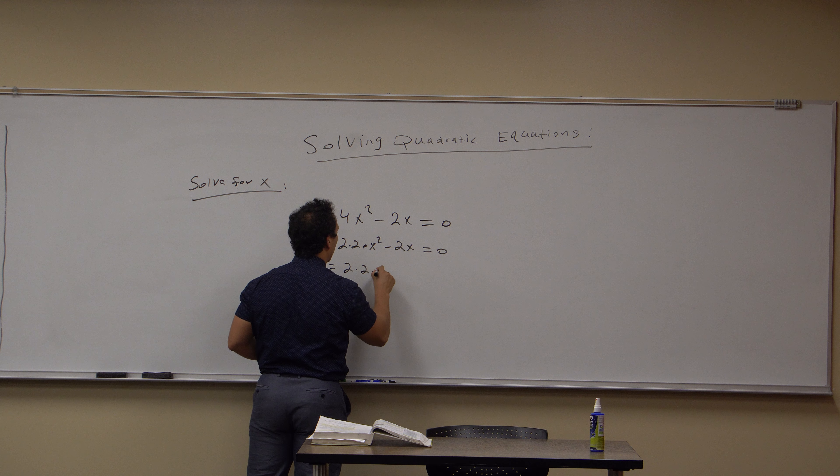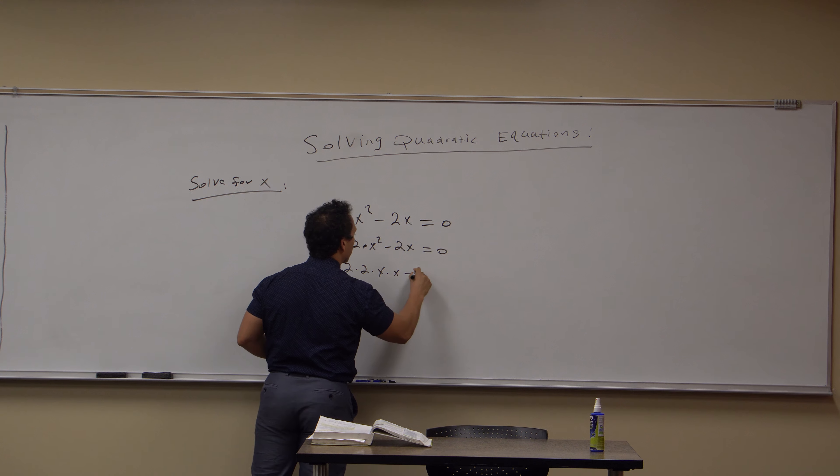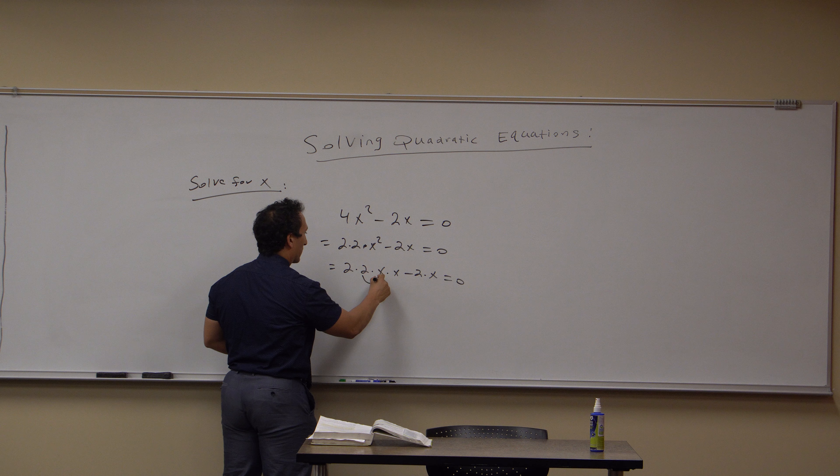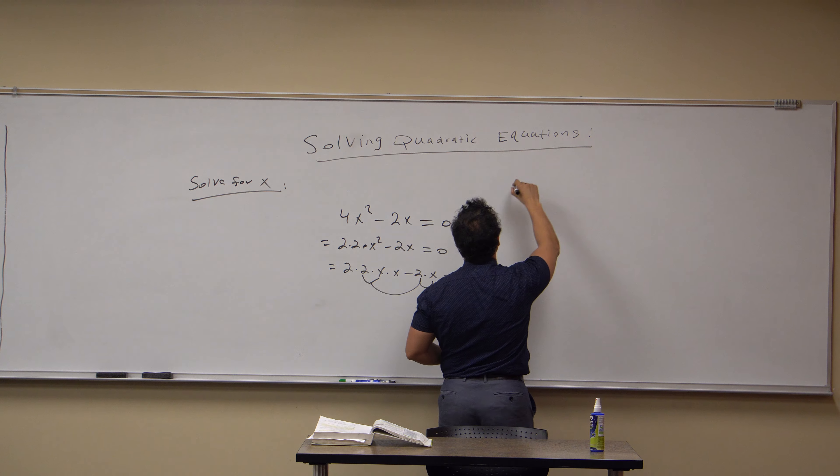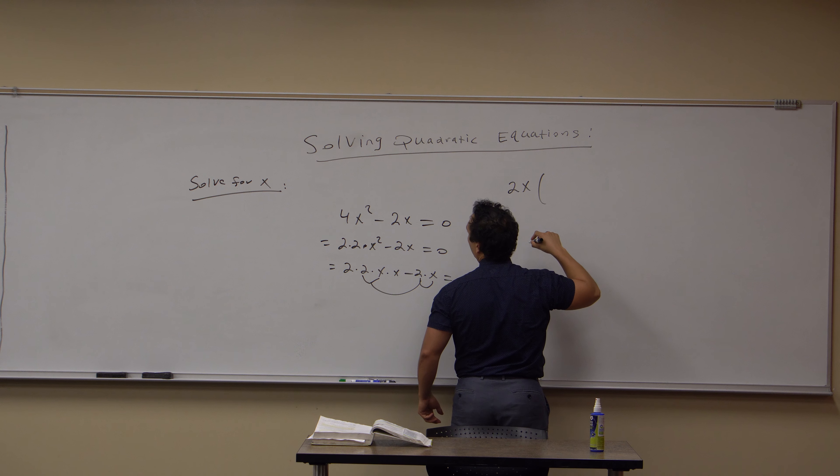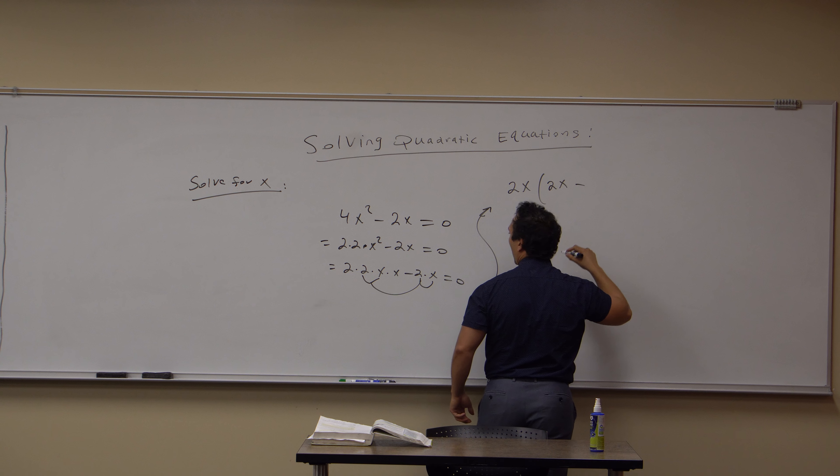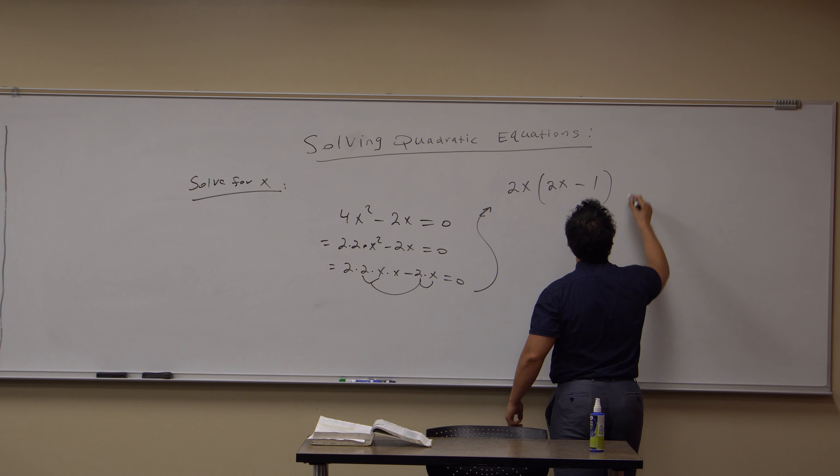So this can be rewritten as 2·2·x·x - 2·x = 0. So I can take out a 2x from each of these, and when I factor that out, a 2x comes out. So then what remains is 2x - 1 = 0.